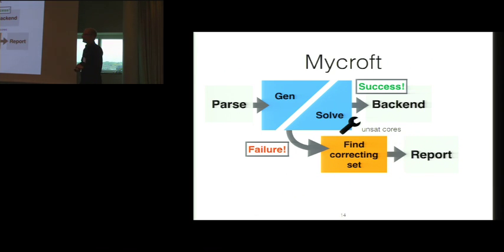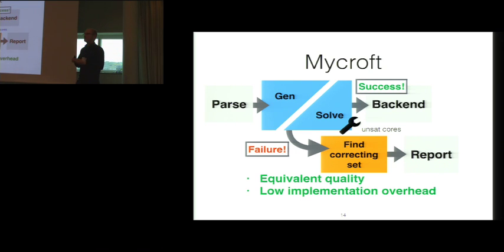We called it Mycroft, after the brother of Sherlock Holmes. And you get a lot of benefits from doing things this way. So in particular, you get equivalent quality error reports because the core algorithm for finding correcting sets can be exactly the same. You get a very low implementation overhead. You don't need to do as much work converting your problem into an alternate constraint system, lifting the solution back up. And you get greatly improved performance because you can leverage all of the domain-specific optimizations that you put in your existing solver, and you don't need to trust this hairy exponential time black box thing.